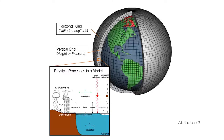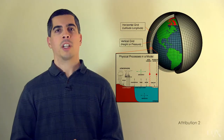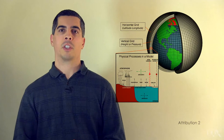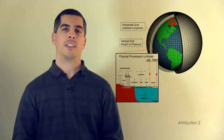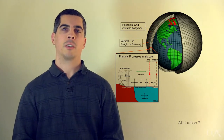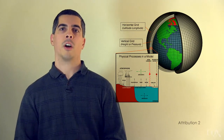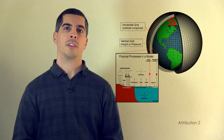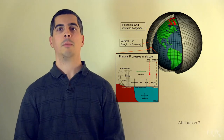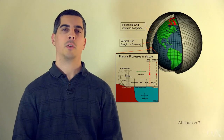Detailed modeling of the Earth's climate really began in the 1950s and 60s. The first climate model that combined how the oceans and atmosphere work was developed in the late 1960s. Over the past 50 years, our understanding of the details of the Earth's climate and our ability to simulate it have continued to improve.